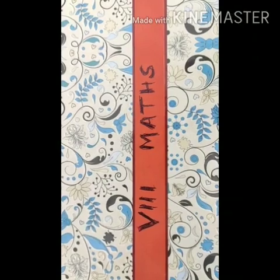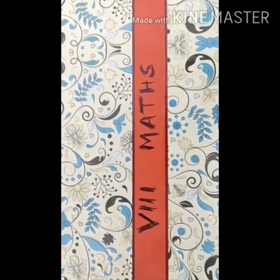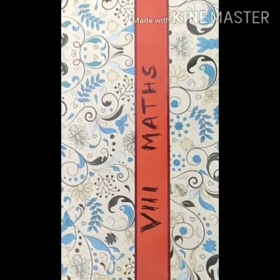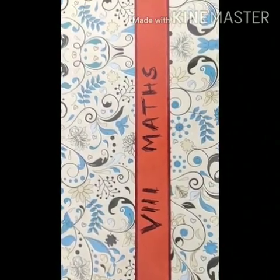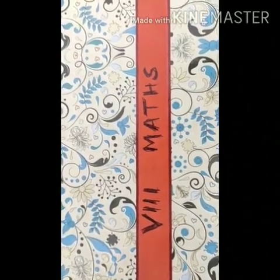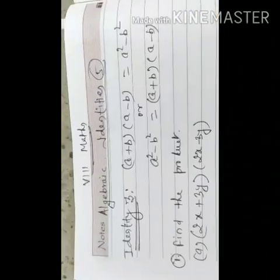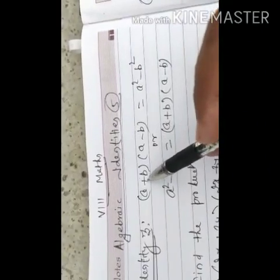Good morning to all of you, dear students. This is the fifth video on algebraic identities. In previous videos we have already learnt two identities, and today the third identity that you will learn is a plus b multiply a minus b.